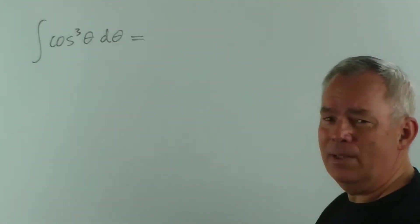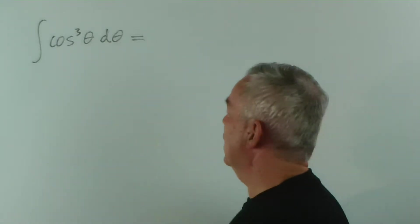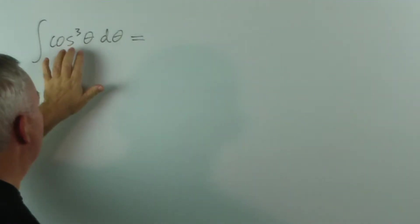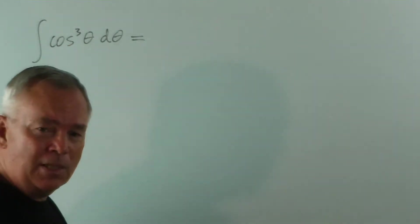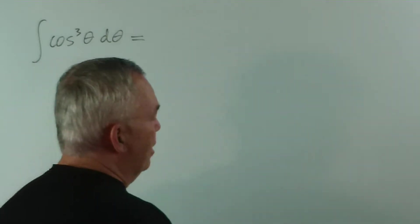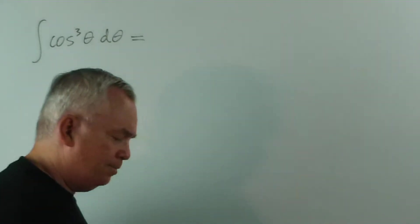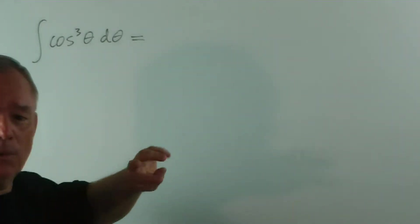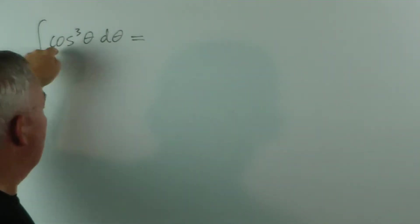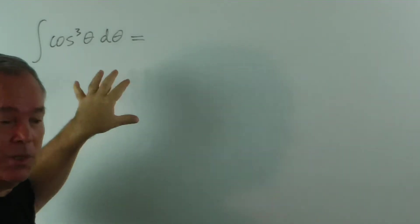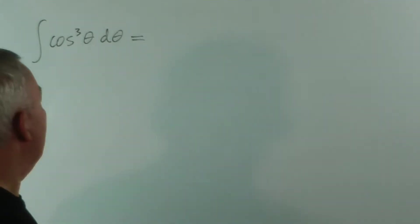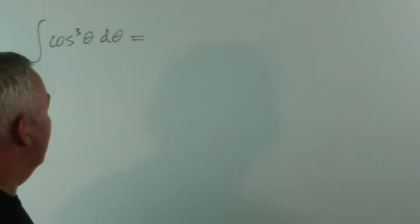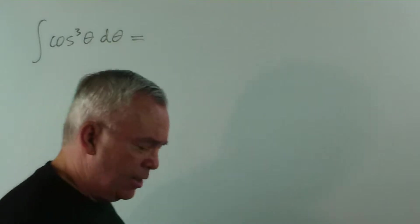And the way we handle this particular one is to recognize that part of this cos cubed θ we can convert and replace with something else. Now, what can we replace it with? It's a bit pointless, I think, replacing part of it with reciprocal functions like 1 over secant of θ or secant squared θ. I don't think that's going to get us very far. You can experiment with that. So, reciprocal functions won't work.